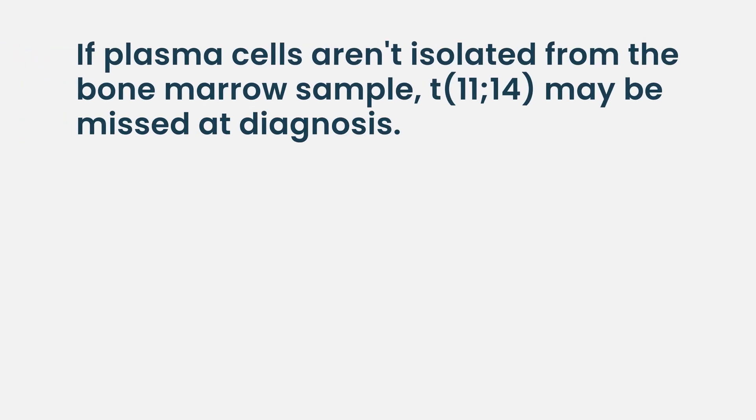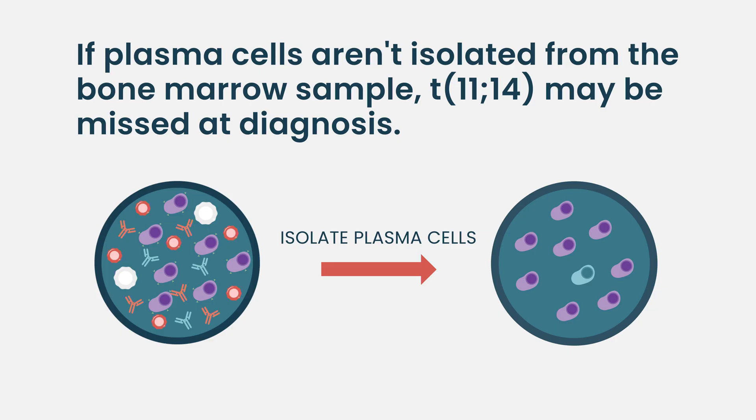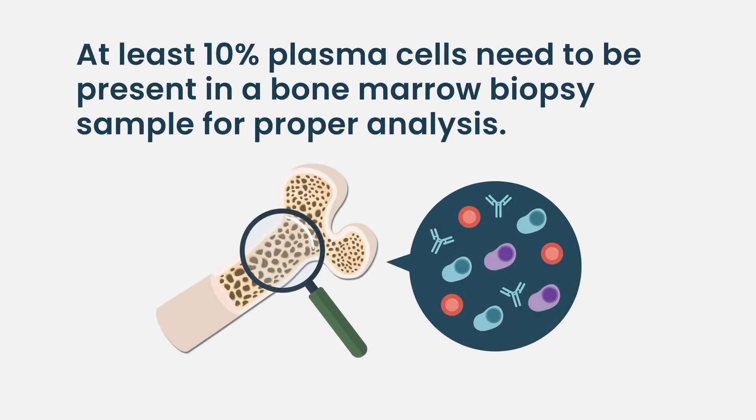We usually see 11;14 at diagnosis, however FISH testing is not perfect. Many centers won't enrich the plasma cells, so when a bone marrow biopsy is done, the quality of the test depends on how it's performed — there can be false negatives or false positives. The main problem is false negatives: if you don't have at least 10% plasma cells in the sample, the test doesn't work well. So if the biopsy didn't capture many cells, we might miss it initially and find it later. For the majority of patients, it's present at diagnosis and continues.